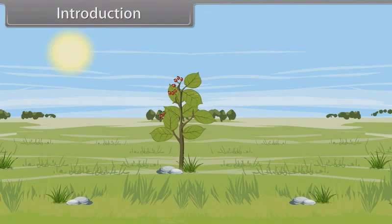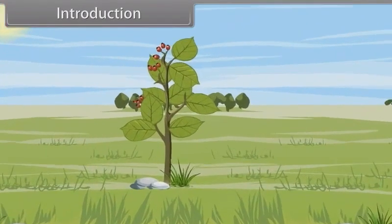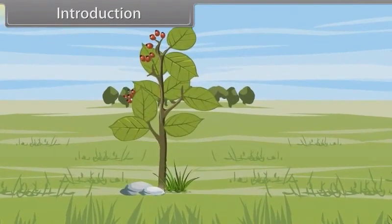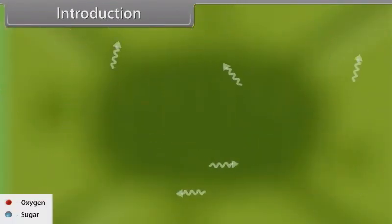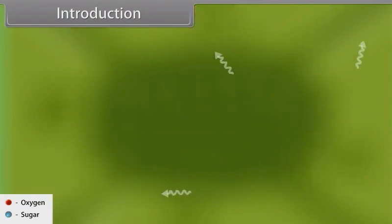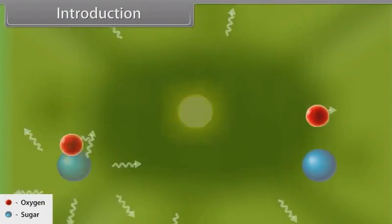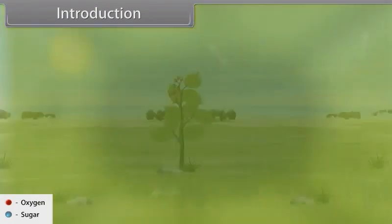Hey kids, we have learned so many things about plants. Now we learn about respiration in plants. Respiration is a process of burning sugar to produce energy for growth, reproduction, and other activities of life.